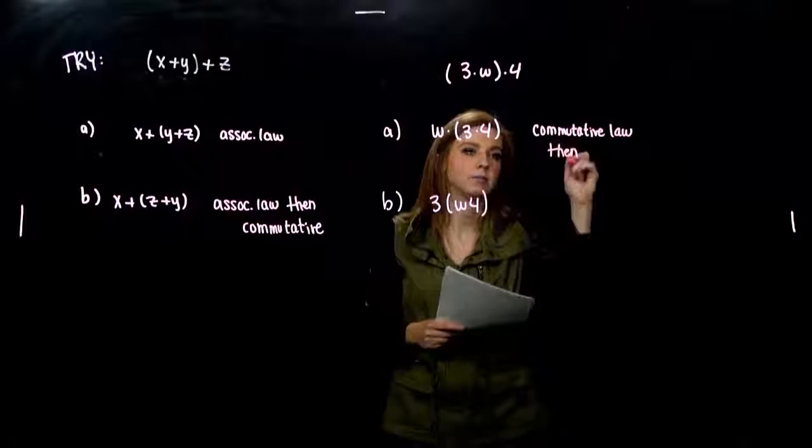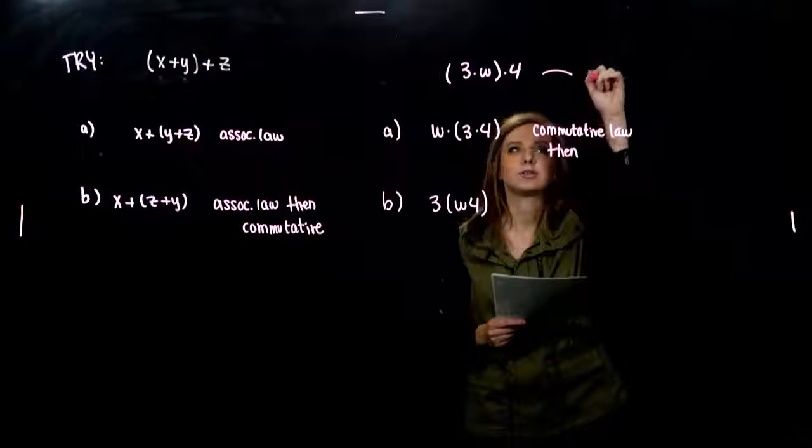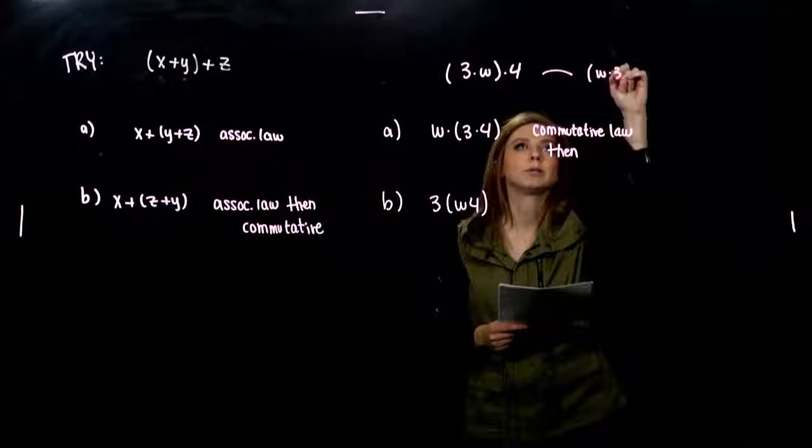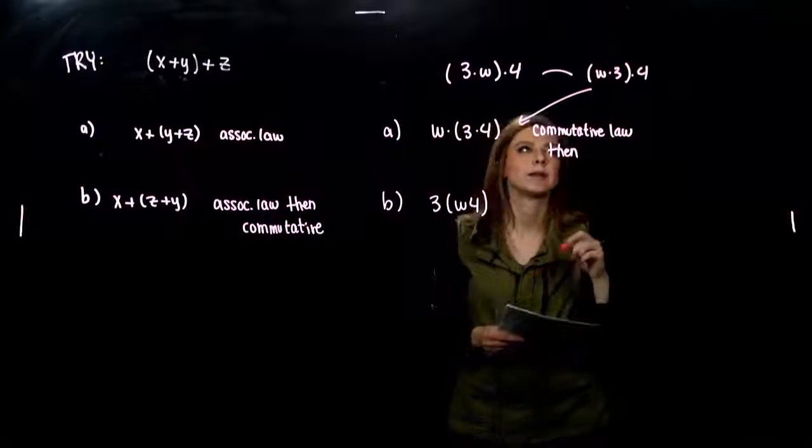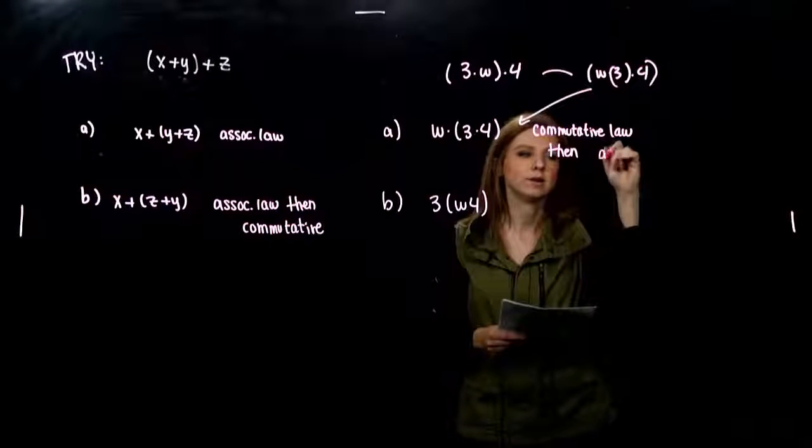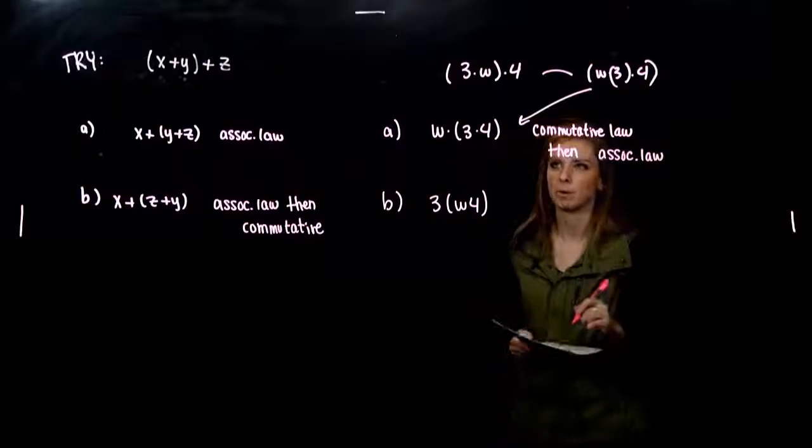Then, what had to happen? So, if I do the commutative law, just kind of break it off into a side blurb, we get here. Then, to move from this one to the next one, what had to happen? We had to regroup around three and four. Then, we had to use the associative law.